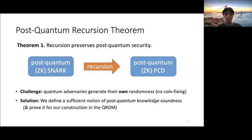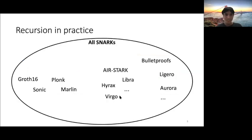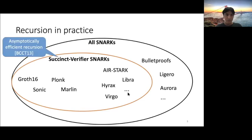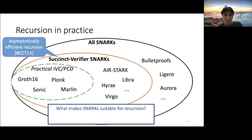So now I want to go on to recursion in practice. We want to actually use these things. So here's a list of many SNARKs that we know. And here are the succinct verifier ones. So from PCCT13, we know all of these can asymptotically recurse. However, in practice, this is not what we see. Instead, it's just this much smaller set, Groth16, Plonk, Sonic, and Marlin, that we've actually achieved practical PCD for. And this is a very small set. So the question is, what is it that makes a SNARK suitable for recursion? All of these SNARKs are pairing-based, trusted setup SNARKs. Hopefully, there's transparent PCD that we can get and post-quantum PCD that we can get.